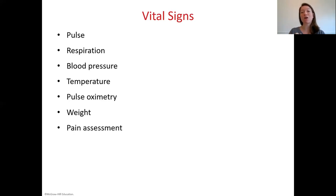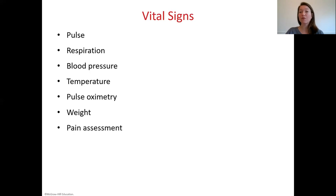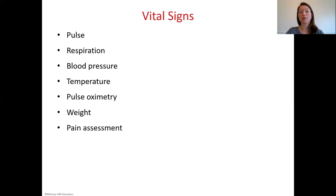Respirations indicate how well a patient's body is providing oxygen to all tissues. We check respiration by watching, listening, and feeling — using a hand on the shoulder or chest for shallow breathers. Just like pulse, we count respirations for a full minute to observe for irregularities. Don't tell the patient right away that you're counting respirations, as thinking about breathing can cause them to change it. Key terms to be familiar with include hyperventilation, dyspnea, tachypnea, hyperpnea, rales, and ronchi, all relating to respiratory rate, rhythm, and quality.